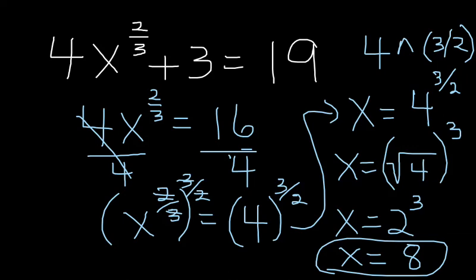And you could check by putting that in, especially if you have a calculator again. You could put in four times eight to the two thirds power. And then you would be able to find that eight to the two thirds power is the cubed root of eight, which is two. Two squared is four. Four times four is sixteen, plus three is nineteen, and it would check out.